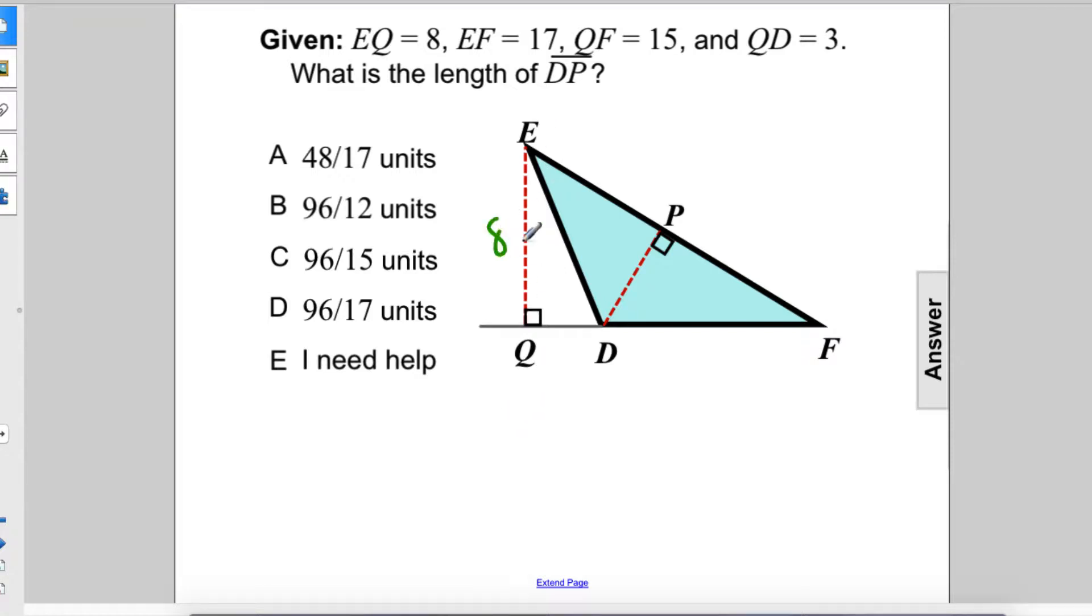Given EQ equals 8, EF equals 17, QF equals 15, and QD equals 3, what is the length of DP?